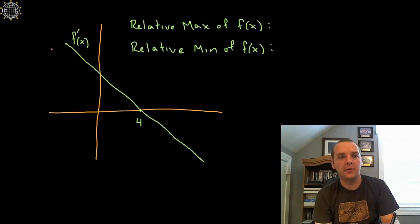Here we're provided a graph of F prime and then they're going to ask us some questions about F of X. For this problem in particular we're being asked where does F of X have a relative maximum and where does it have a relative minimum.